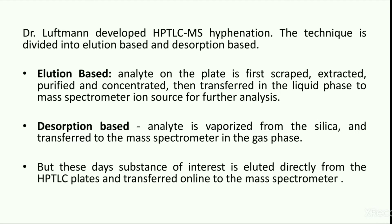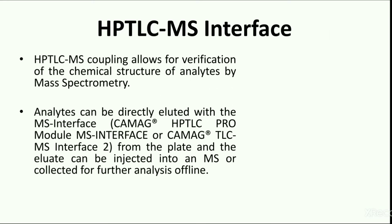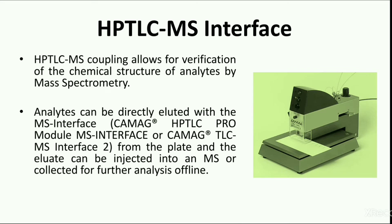Nowadays, by the use of the HPTLC-mass interface, the substance of interest is eluted directly from the HPTLC or TLC plates and transferred online to the mass spectrometer. Two universally used interfaces are the HPTLC ProModule Mass Interface and the TLC Mass Interface 2, both by the brand Camag. Using these modern interfaces, analytes can be directly eluted towards the mass spectrometer from the TLC or HPTLC plates.